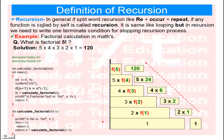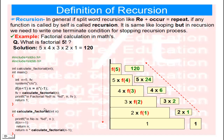Now let's look at the recursion process — how we can replace the loop with recursion. Here is the function called 'calculate_factorial' that takes an integer parameter. The condition is: if n equals 1, then return 1. Otherwise, return n multiplied by calculate_factorial(n minus 1). This is recursion — the function 'calculate_factorial' is calling itself with n minus 1 inside its own body.